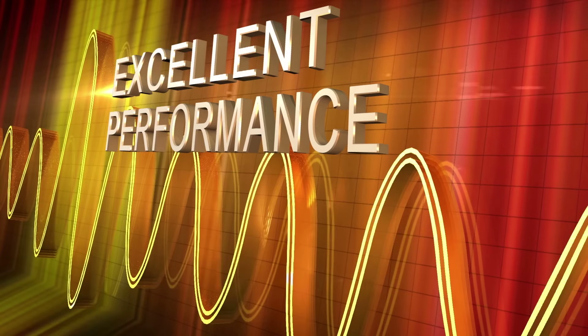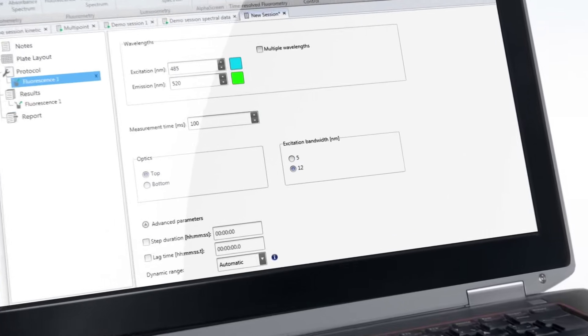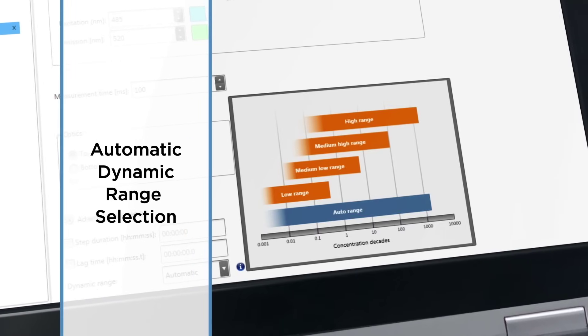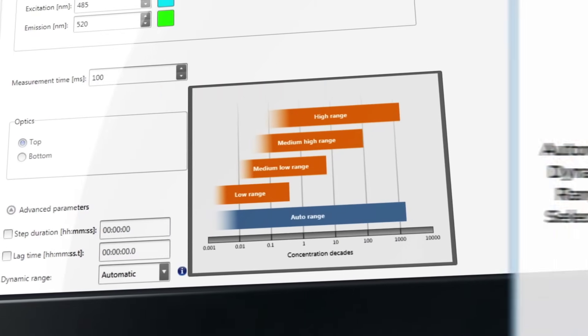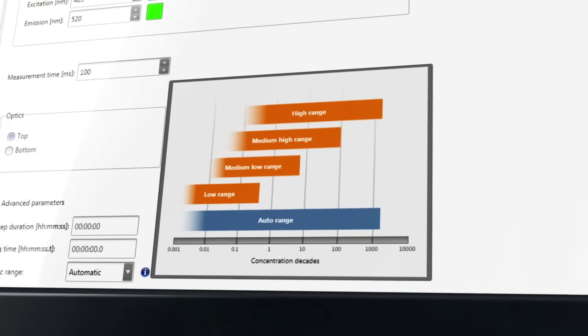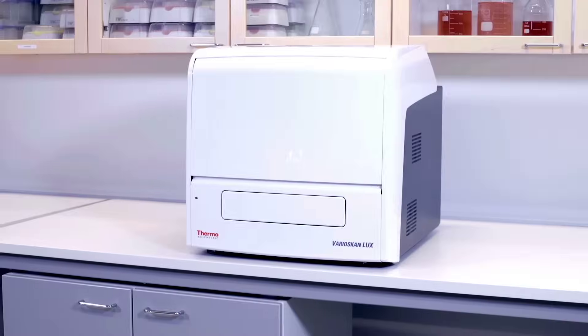For excellent performance, the VarioScan Luxe delivers high sensitivity even in the most challenging applications. Plus, it features dynamic range selection, adjusting to the optimal measurement setting for accurate results at all signal intensities.